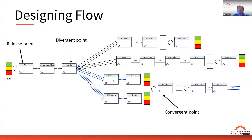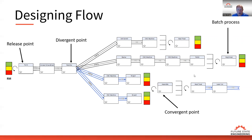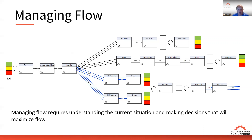We can also have convergent points where multiple value streams come together — like this assembly process where I need components from both value streams to assemble the product. Then I might also have batch processes like this heat treat operation where product goes into an oven as a batch. I have a supermarket before it where I can accumulate product and then run it as a batch.